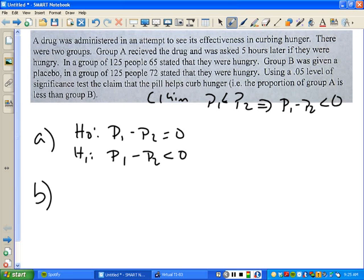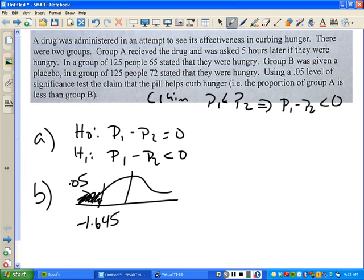So there's part A. Part B, is this going to be a left tail, right tail, or a two-tail test? It is a left tail test. Now, that area is 0.05. That's given to you as a significance level. When you look up 0.05 on the Z-score chart, you get negative 1.645. That becomes your critical value.